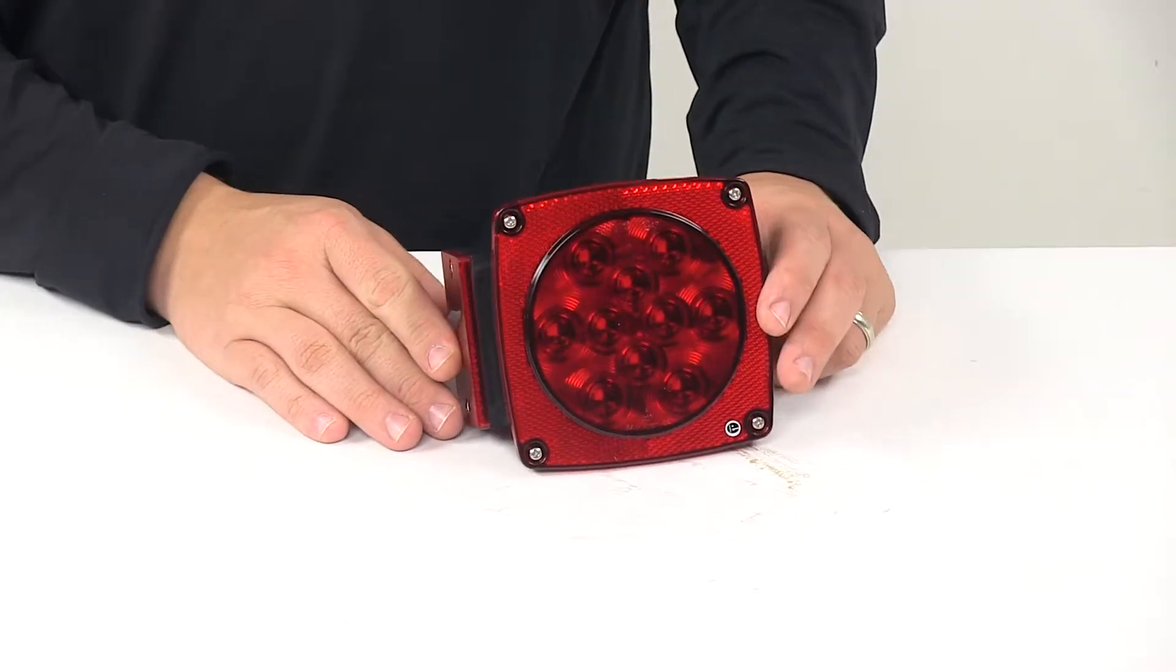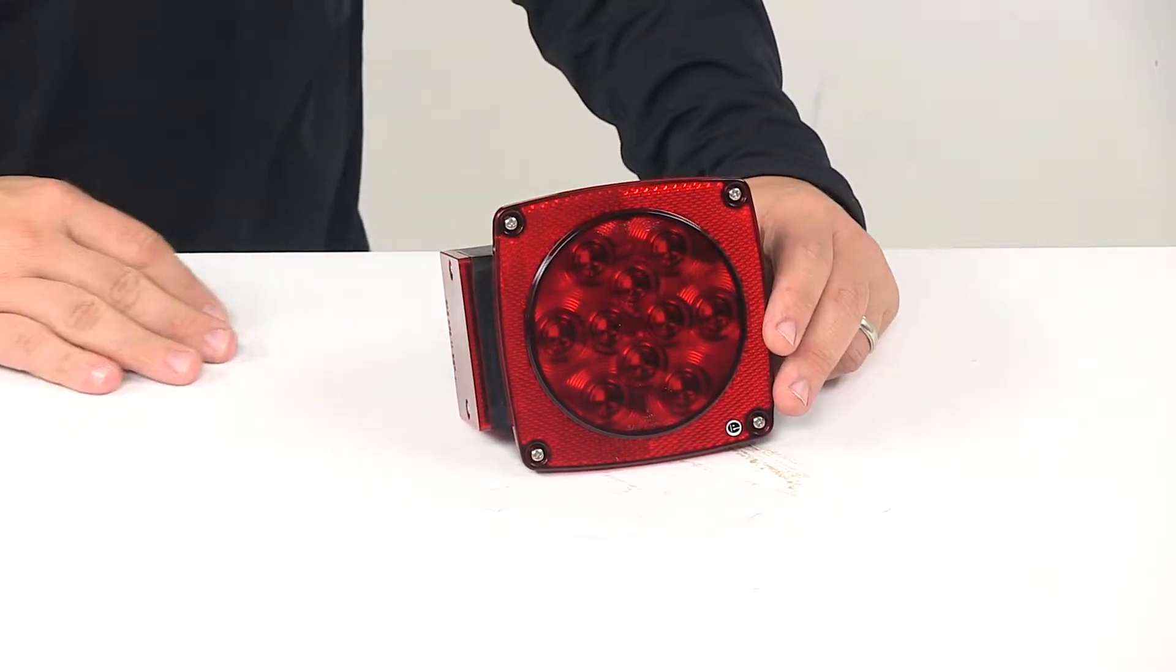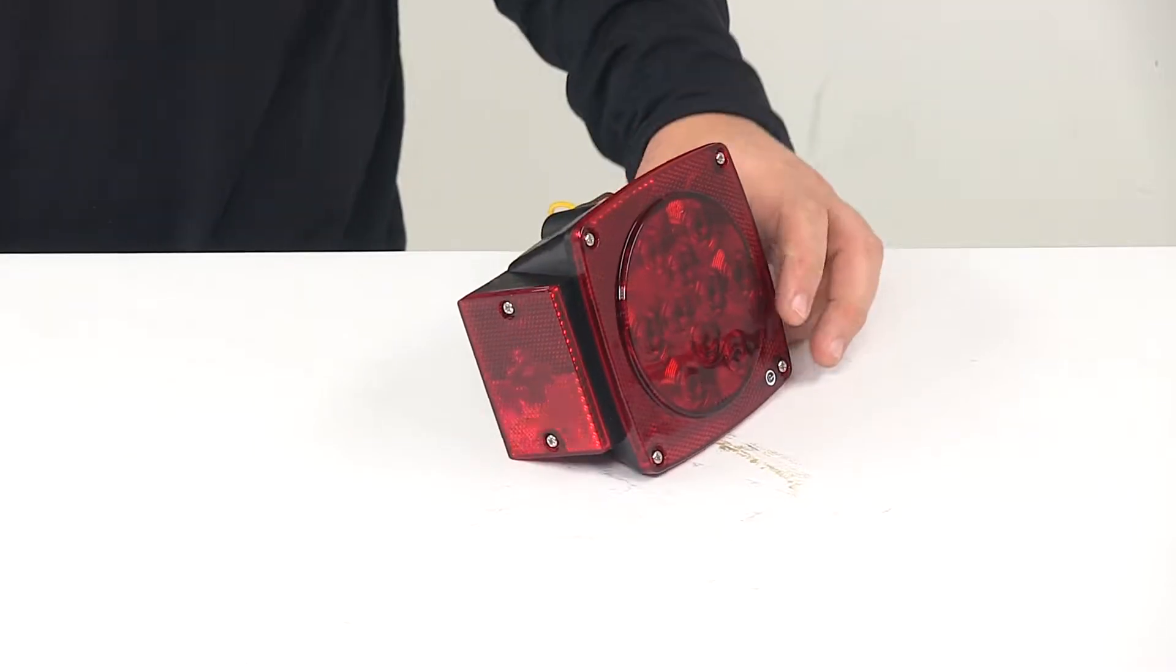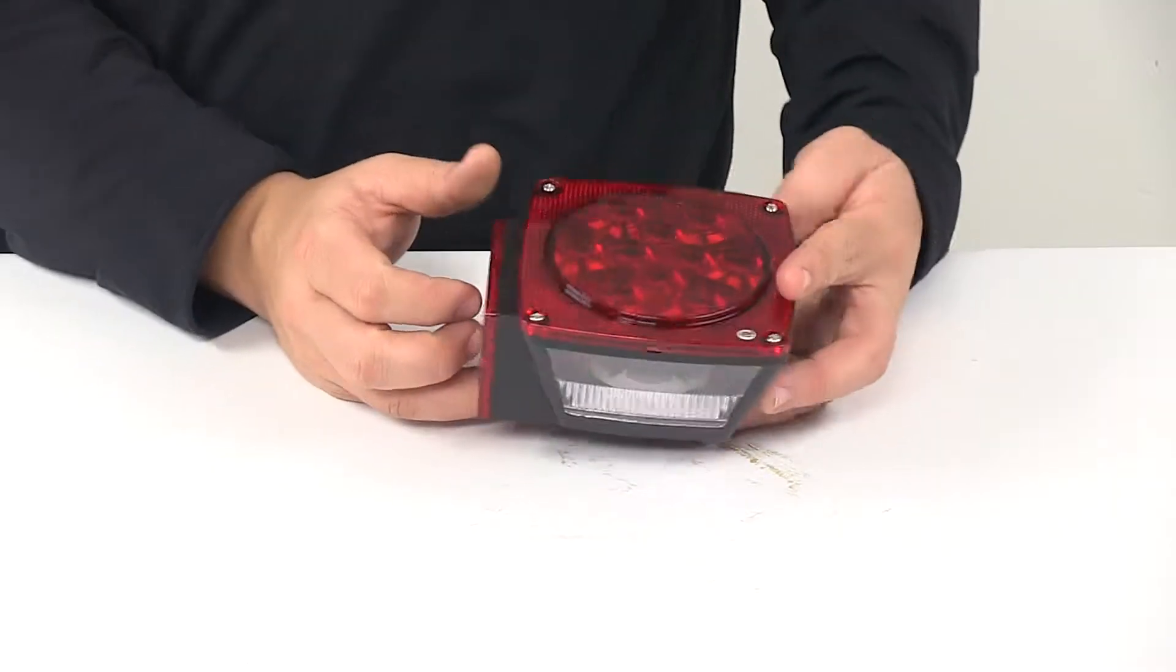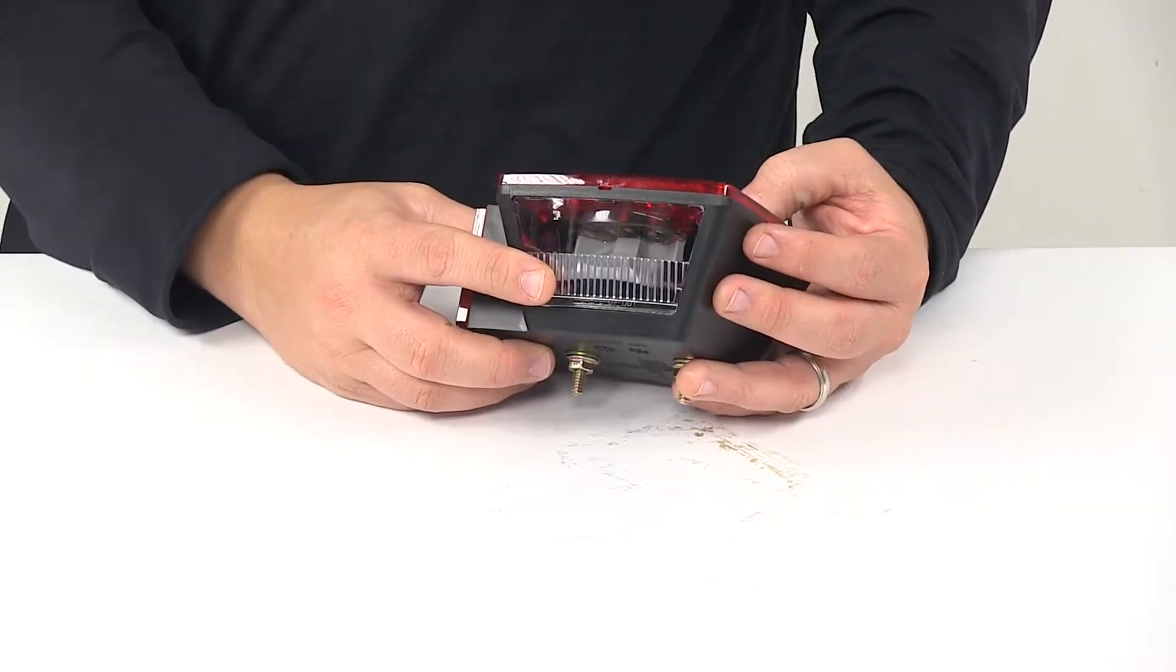Stop light, turn signal light, taillight, rear reflex marker, side marker light, side reflex reflector, and your license plate light here on the bottom.